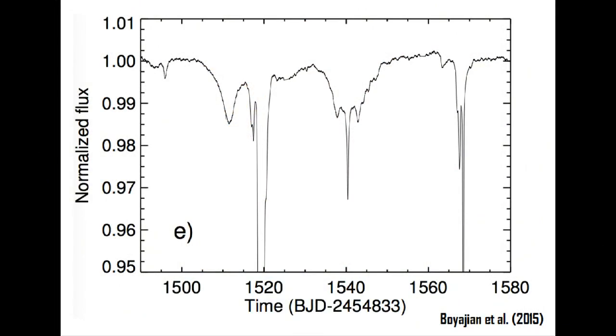There's never a quiet day in exoplanet research, and this is never more true than whenever a new discovery could potentially be linked into the age-old question of life in the universe. So recently, a certain star in the Kepler field, KIC 8463852, has been attracting a great deal of attention, following certain very anomalous features that have been identified in its light curve.